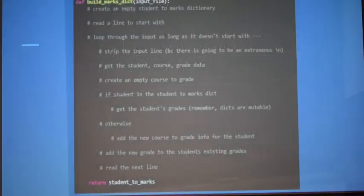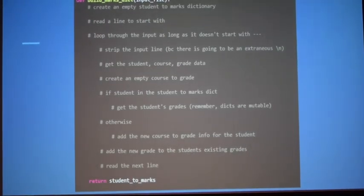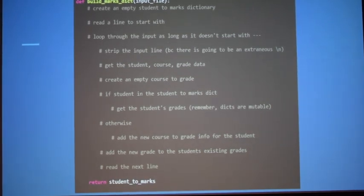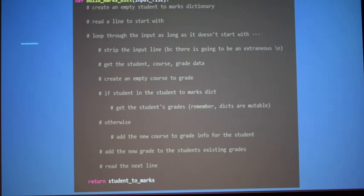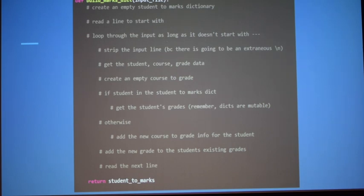One approach: start with line = file_handle.readline(), then do a while loop where if line does not equal '---', you split the line. One important thing to note: whenever you read a line there's always a '\n' at the end, so you have to strip that out. Make sure to strip the line first, then split at commas.